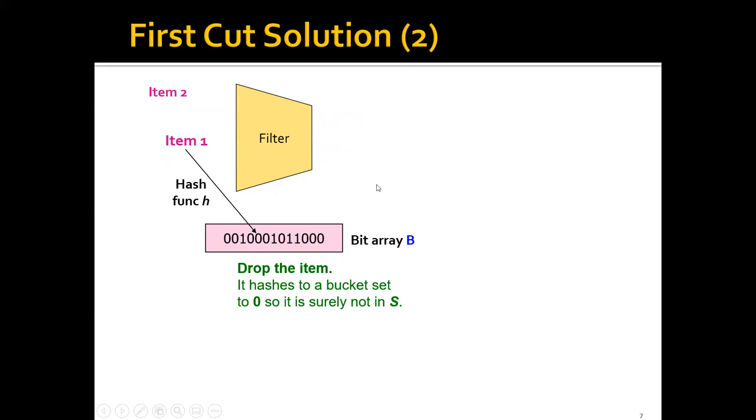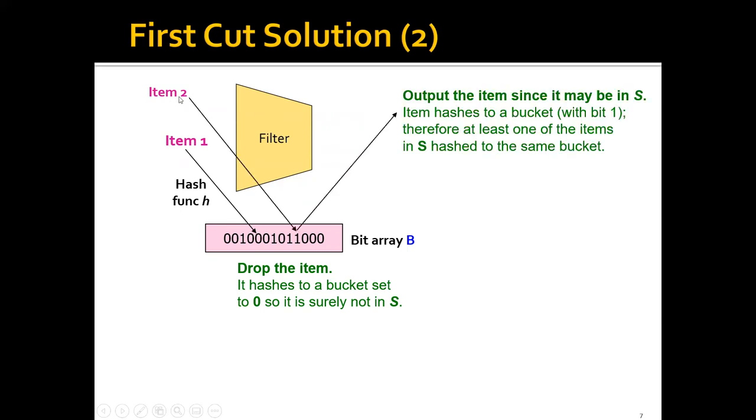So we do not output this item. And next, we have a new item, item 2. We'll go through the hash function and it hashes to a bucket that's set to 1. So we can see that at least one of the items in set S already hashed to the same bucket. So this item may be in S. Therefore, we can output this item.